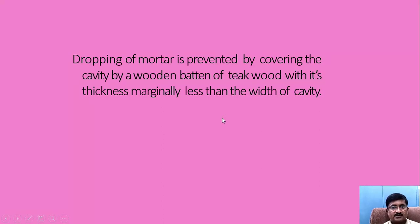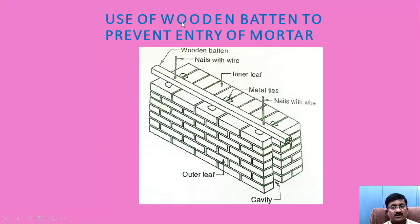Dropping of mortar is prevented by covering the cavity with wooden battens, or timber wood, with thickness marginally less than the width of the cavity. To maintain the cavity intact during construction, wooden battens are also provided to avoid the entry of mortar into the gap.